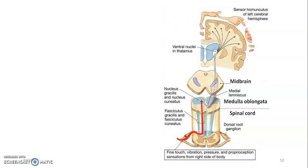To summarize: sensory information enters the dorsal horn, ascends ipsilaterally in fasciculus gracilis if below T6, or fasciculus cuneatus if above T6 — carrying proprioception and discriminatory touch. At the medulla it synapses with the second-order neuron at nucleus gracilis or cuneatus, immediately decussates, then ascends as the medial lemniscus through pons and midbrain to the ventral posterior nucleus of the thalamus, which synapses with the third-order neuron projecting to the primary somatosensory cortex.